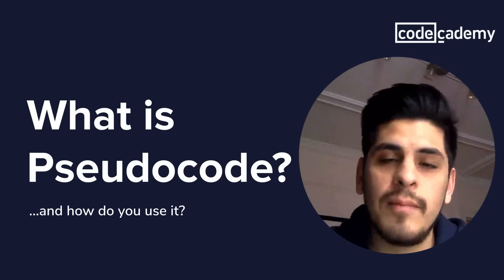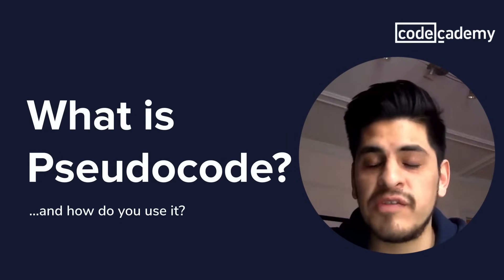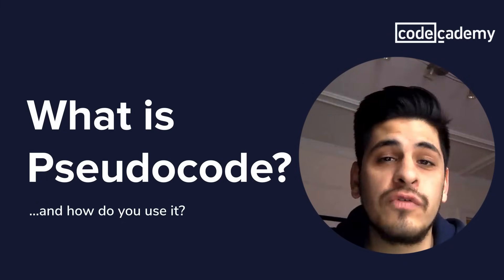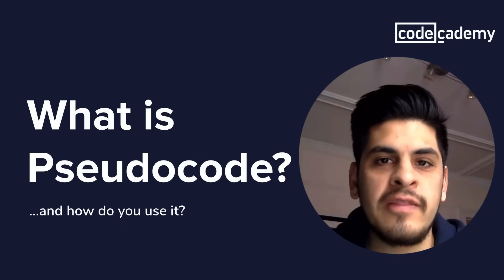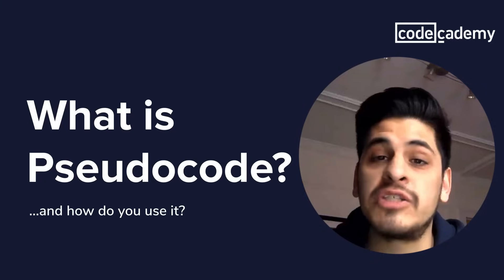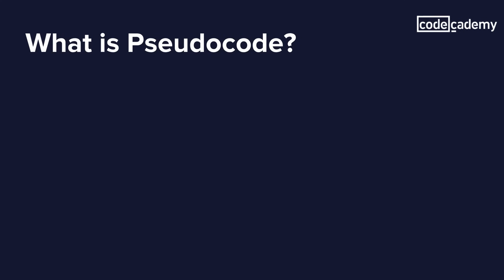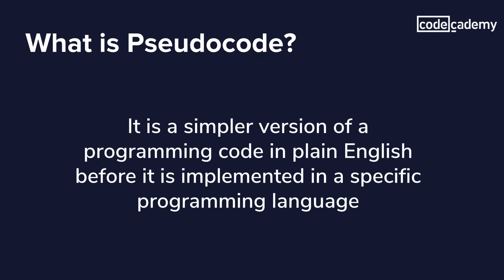Hi everyone, my name is Carlos. I'm a web developer based in Brooklyn, New York, and today we're going to look into pseudocode. We're going to see how to use it, how to write it, and we're going to look at an example where we actually use it to solve a coding algorithm. So what is pseudocode? Pseudocode is a simpler version of a programming code in plain English before it is implemented in a specific programming language.